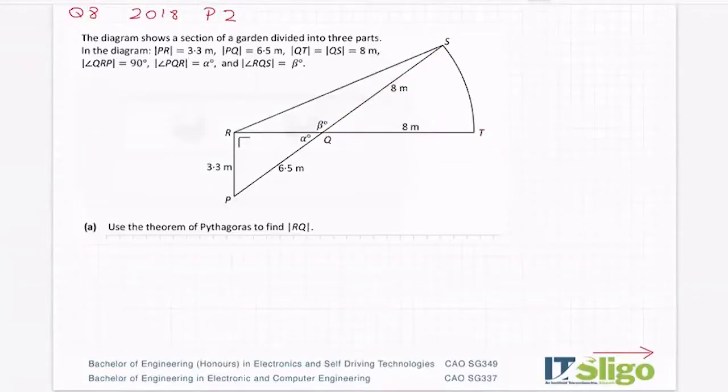So QT is equal to QS, which is equal to 8 meters. The angle QRP is a right angle. The angle PQR is alpha, or looks like an A, and the angle RQS equals beta. That looks like a B.